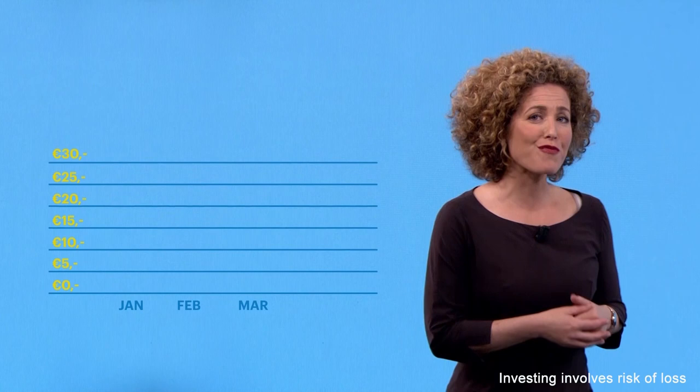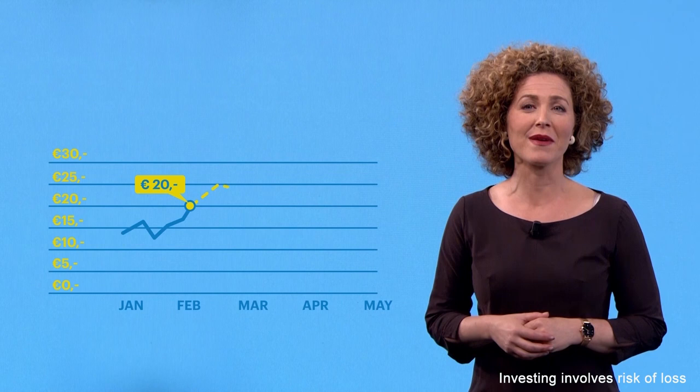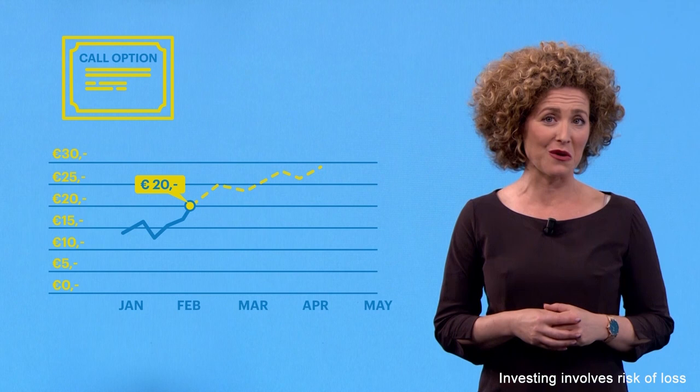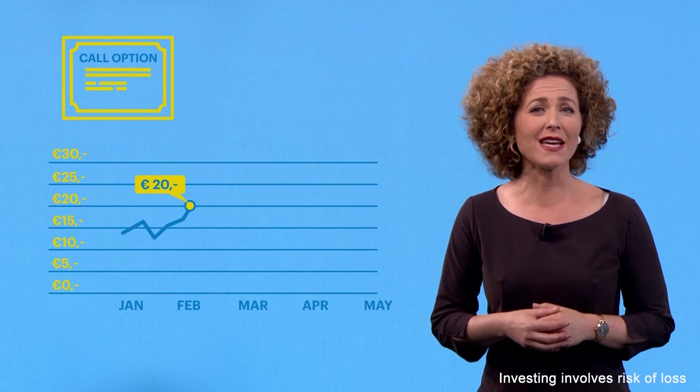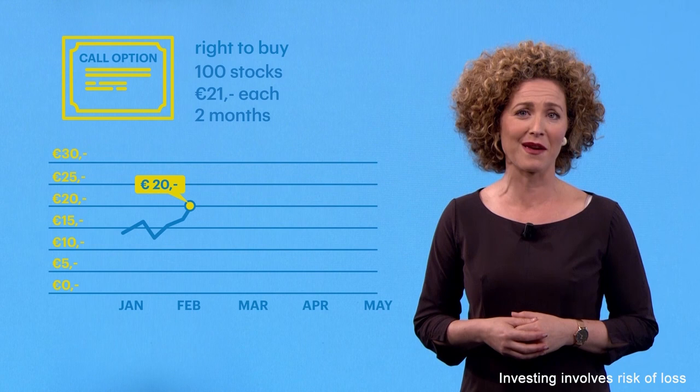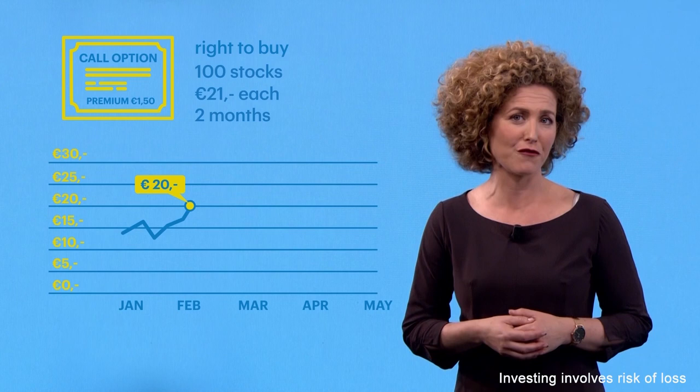Suppose the price of a stock is 20 euros, but you expect an increase in the upcoming month. You can then buy a call option, giving you the right to buy this stock later at a predetermined price. Say you choose an option that gives you the right to buy 100 stocks for 21 euros each in two months' time. To obtain this right, you pay a premium of 1 euro 50, for example.